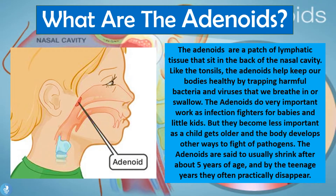Before we get into the specifics of adenoiditis itself, let's do a quick review on what are the adenoids. The adenoids are a patch of lymphatic tissue that sit in the back of the nasal cavity. Here's the nasal cavity and this is where the adenoids are situated. Like the tonsils, the adenoids help keep our bodies healthy by trapping harmful bacteria and viruses that we breathe in or swallow.